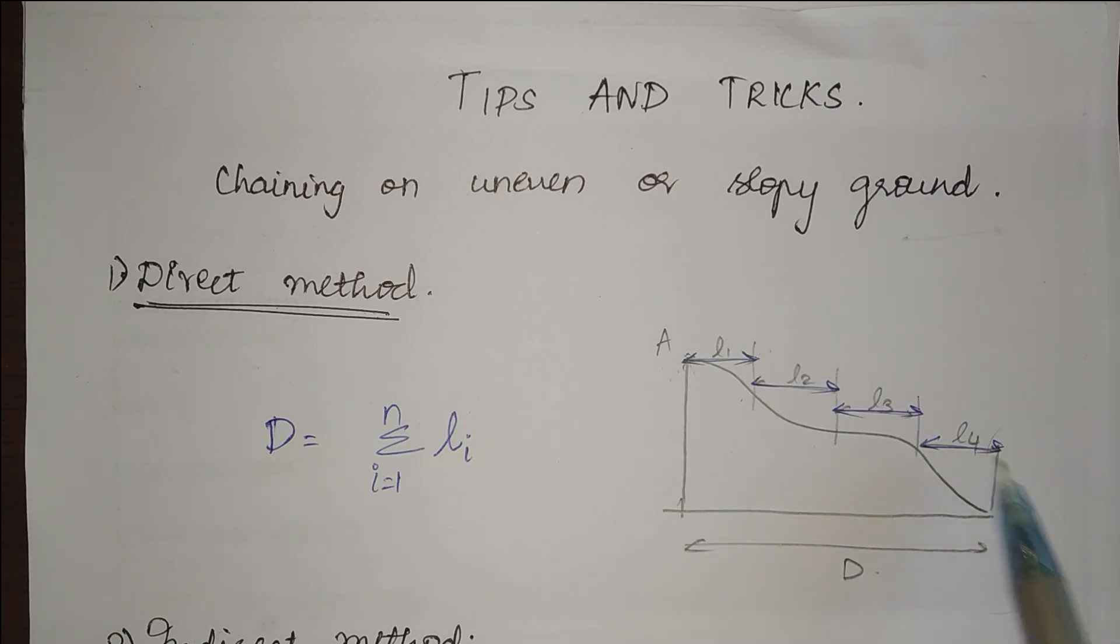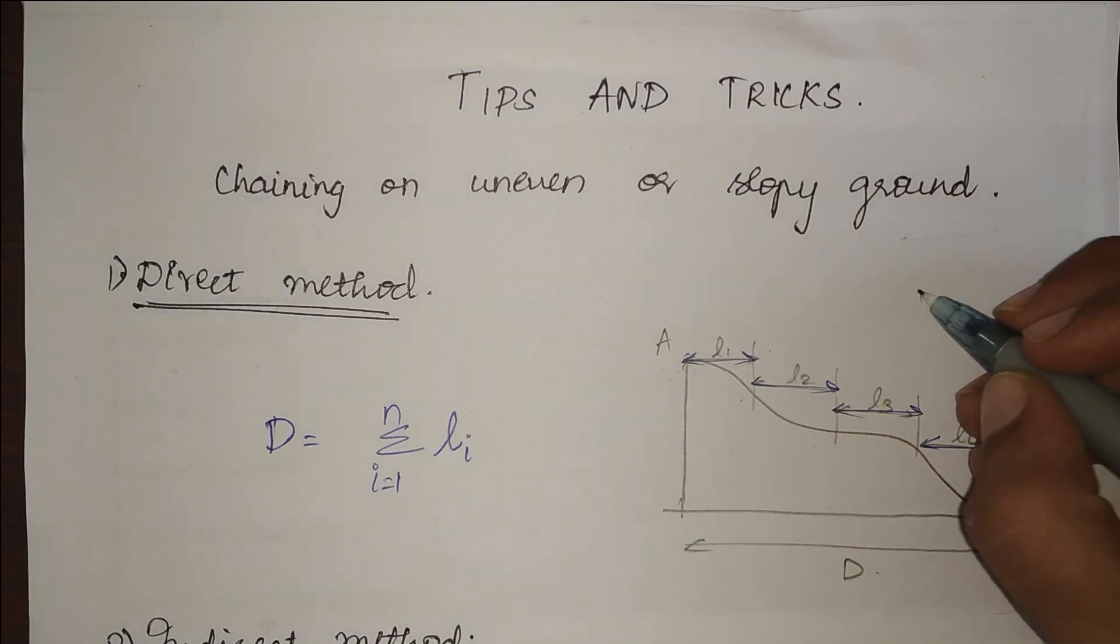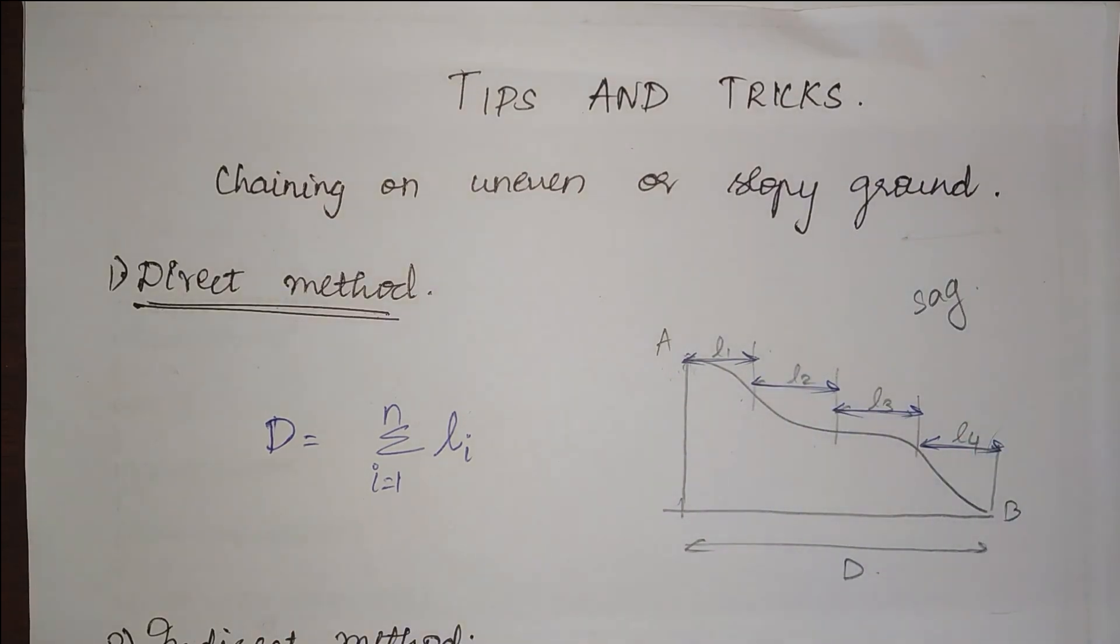My final distance would be a summation of li. The disadvantage in this method is that while we are finding the horizontal distance the chain tends to sag and this leads to error. We have to limit the distance to a shorter amount, so we have to do multiple number of sets and repeat so much so that the sag is minimum. This method is not that effective.